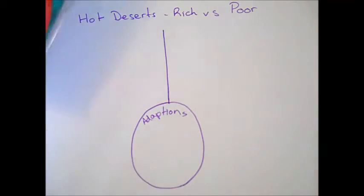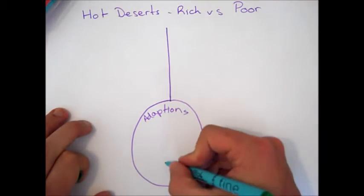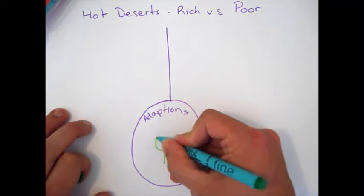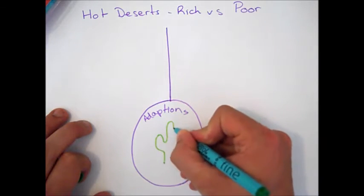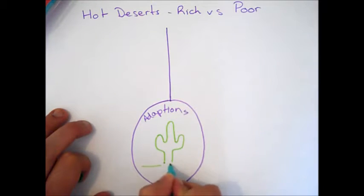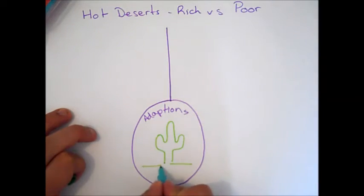So, we take our traditional kind of idea of a desert plant and we go for our cactus. Traditional kind of cartoon-style cactus. Now, we've got a huge number of adaptations that we can think of here. If we start from the bottom up, the first thing we want to consider is the root system.